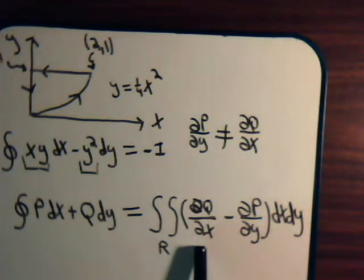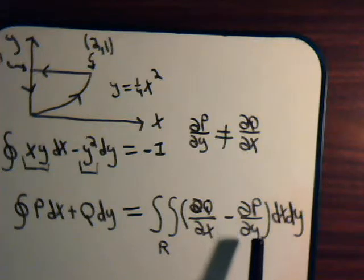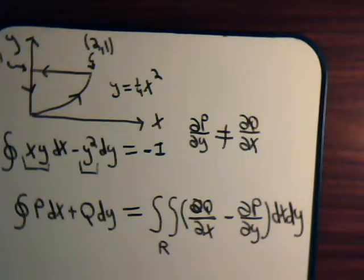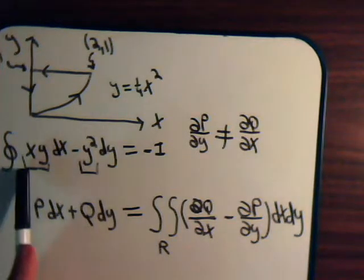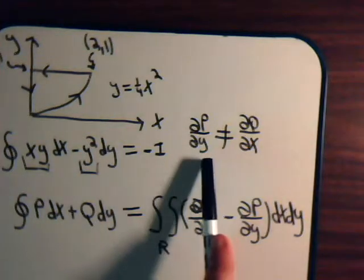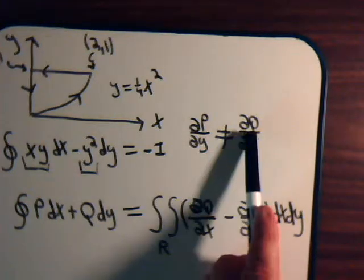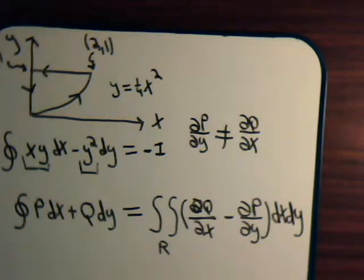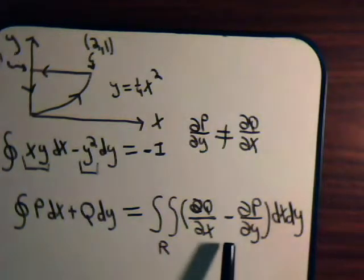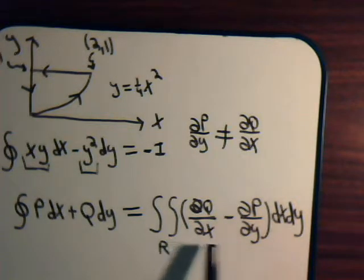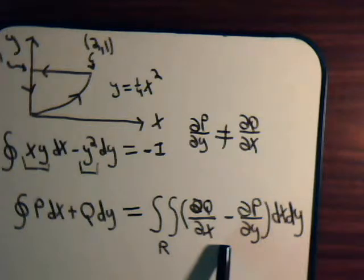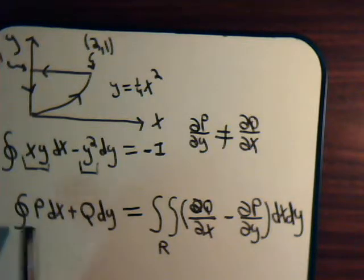We have the partial of Q with respect to X minus the partial of P with respect to Y. Well, for this integral here, the partial of P with respect to Y and the partial of Q with respect to X are not equal. Therefore, this can never be zero. And if this can never be zero, then, of course, the line integral can never be zero.